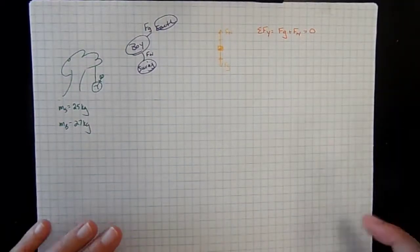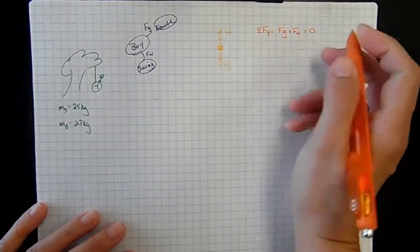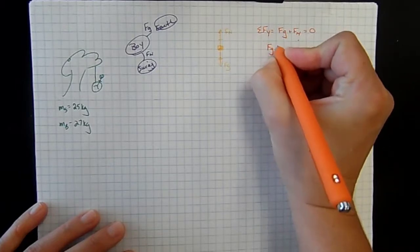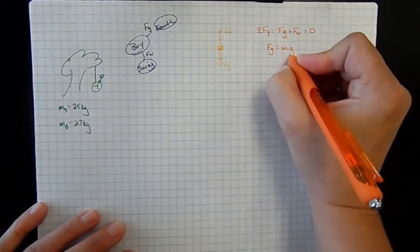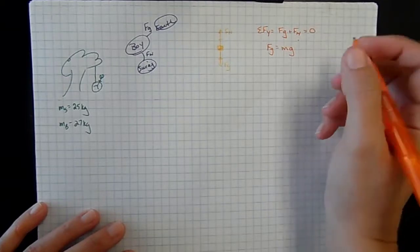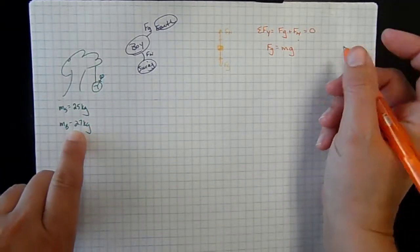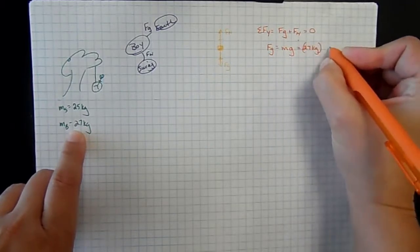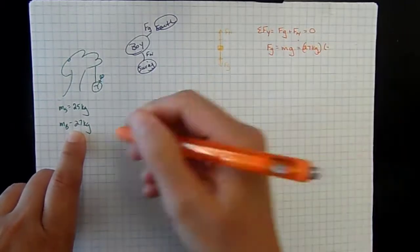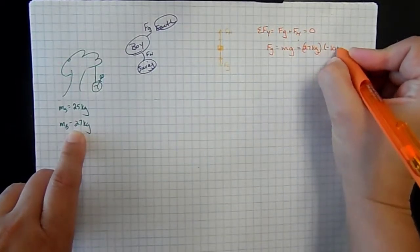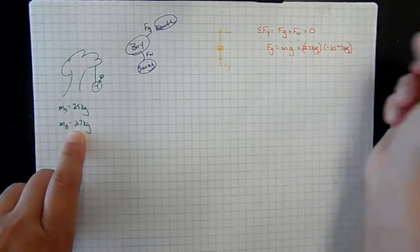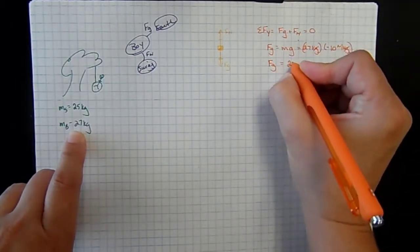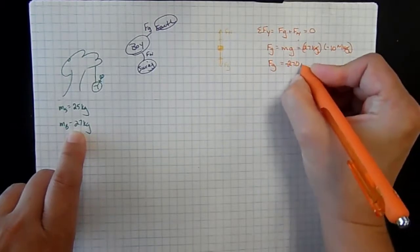Since we're trying to find all of the forces involved, we only have gravity and normal — so this is pretty straightforward. We know that the force of gravity is equal to mass times the gravitational constant. The force of gravity acting on our boy: he has a mass of 27 kilograms, and our gravitational constant is negative 10 newtons per kilogram. Kilograms cancel out.